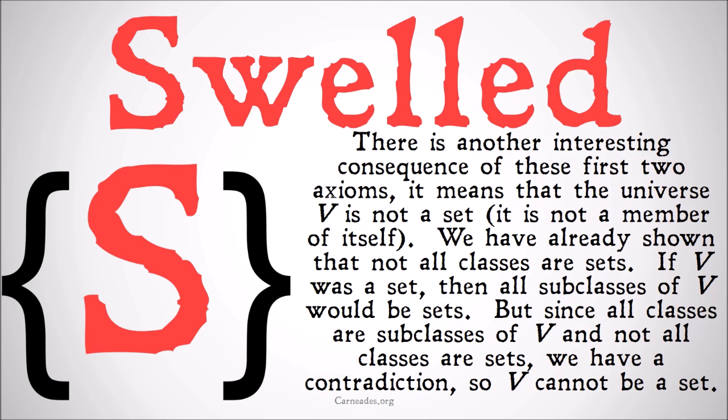Basically, because there exists at least one subclass of V which is not a set, V cannot itself be a set, because all subclasses of a set must also be sets.